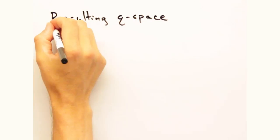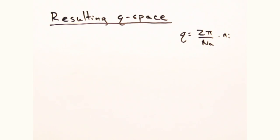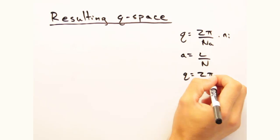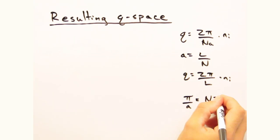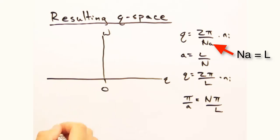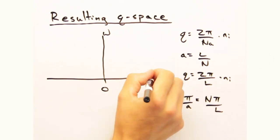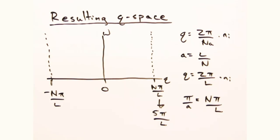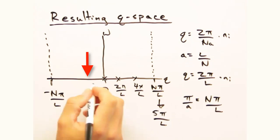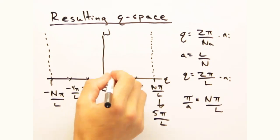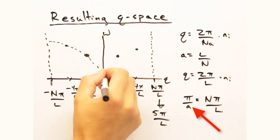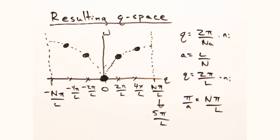Well, we know Q is 2 pi over capital N times A, all of that times some integer n_i. And that N times A is the total length L. So there would be one mode every 2 pi over L in Q space. But the edge of Q space is at pi over A. And we know A is L over N. So the edge of our Q line would be at capital N pi over L.